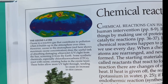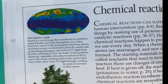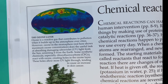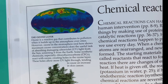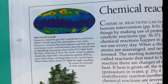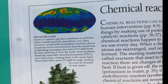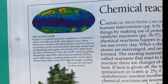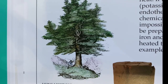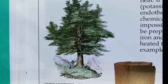Ozone is a reactive gas that contributes to pollution when it builds up in the atmosphere over cities. However, ozone in the stratosphere does the useful task of absorbing damaging ultraviolet light from the sun, screening it from the earth. Some synthetic chemicals, especially chlorofluorocarbons, react with ozone, creating holes in the ozone layer. These holes allow more UV light through, tending to cause an increase in skin cancer. Plants make carbohydrates in a process called photosynthesis.